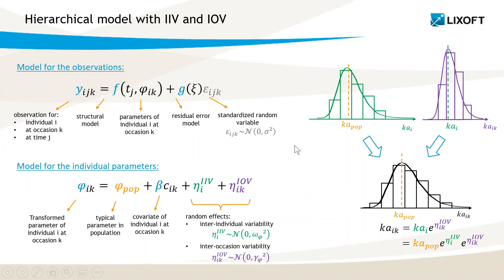The total model with the error model then has three levels of variability: the residual error epsilon, eta for IIV, and eta for IOV. If between-occasions variability is apparent, it is important to take it into account; otherwise it will be contained in the residual errors that won't be independent. This may produce bias in the estimation of population pharmacokinetic parameters.